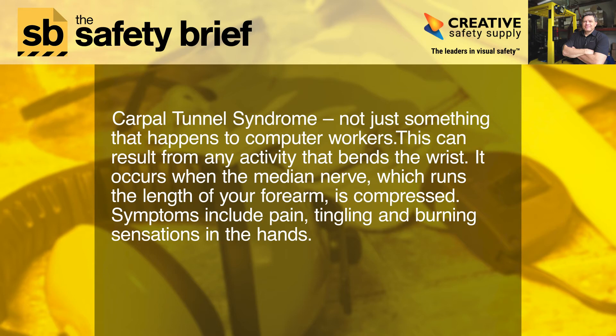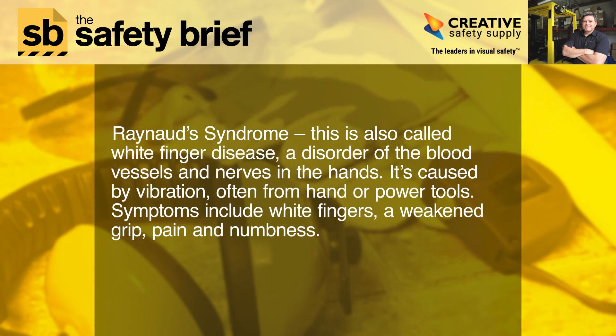Carpal tunnel syndrome occurs when the median nerve, which runs the length of your forearm, is compressed. Symptoms include pain, tingling, and burning sensations in the hands. Raynaud's syndrome, also called white finger disease, is a disorder of the blood vessels and nerves in the hands. It's caused by vibration, often from hand or power tools. Symptoms include white fingers, a weakened grip, pain, and numbness.